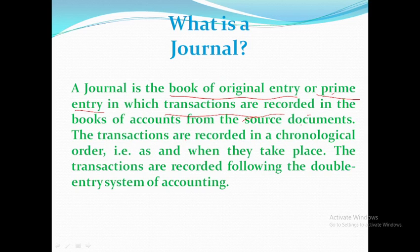Welcome to Raw Perfect Classes. Today's topic is: what is a journal? A journal is a book of original entry, or prime entry, in which transactions are recorded in the books of accounts from source documents. The transactions are recorded in a chronological order — that is, in a systematic way, date-wise, as and when they take place.